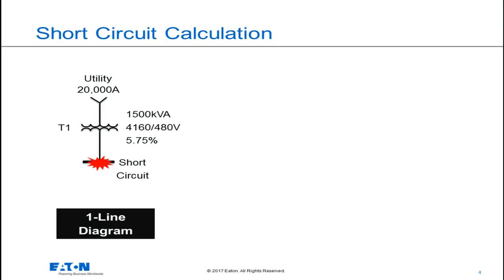So here's your basic service entrance single line diagram. We have the utility available fault current, which here in this case is 20,000 amps.